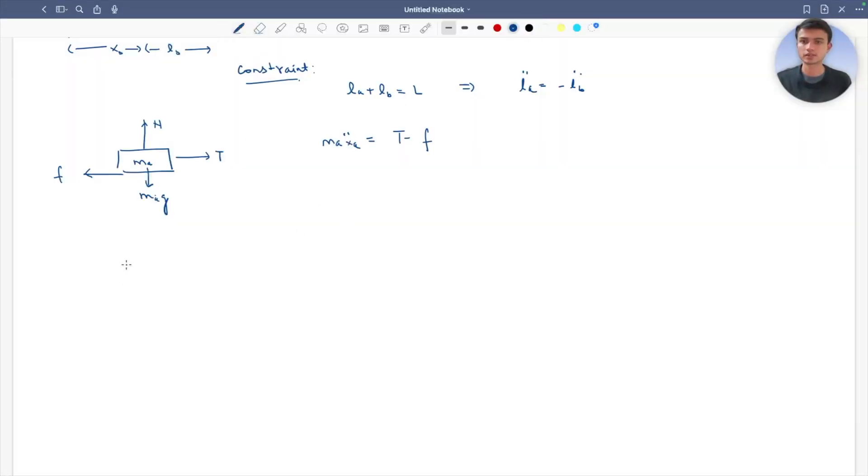For mb, I have frictional force in this direction and tension in this direction. So mb xb double dot equals tension plus frictional force.